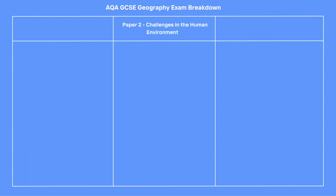Paper 2 is Challenges in the Human Environment — the Human Geography topics. It is also 90 minutes long, and 88 marks are available, a pace of 1 mark per minute.